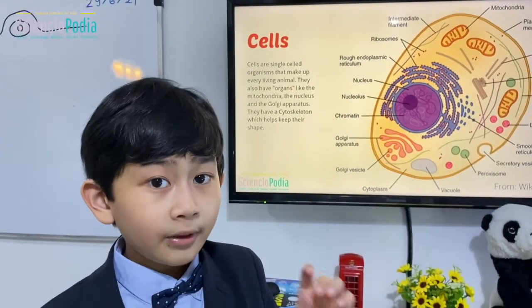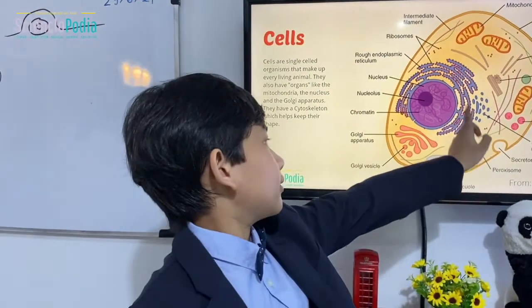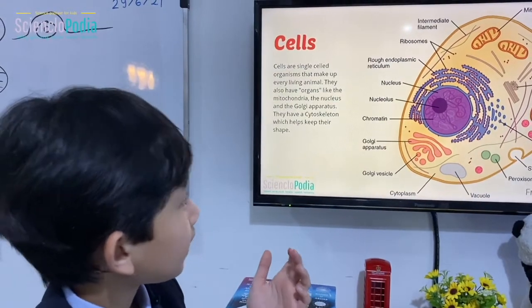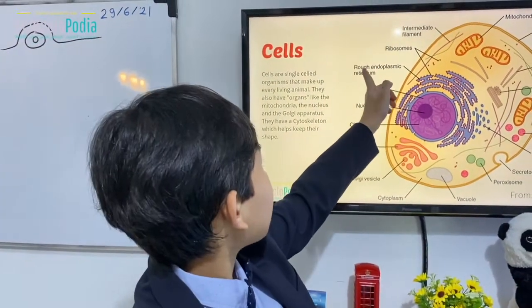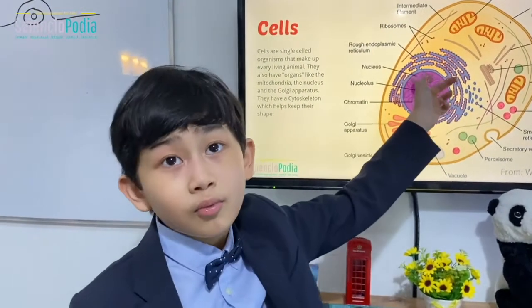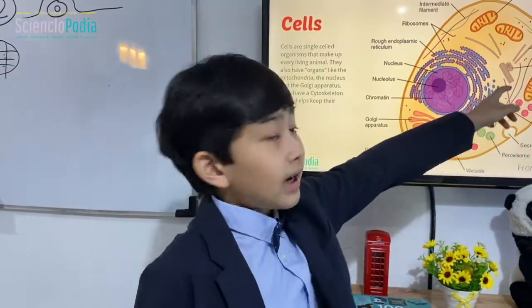The smooth endoplasmic reticulum does the same thing as the rough endoplasmic reticulum. You can say that the rough one and the smooth one are basically the same, except that one has more ribosomes and one has less.